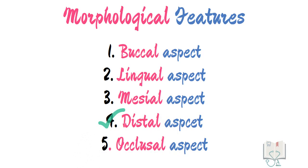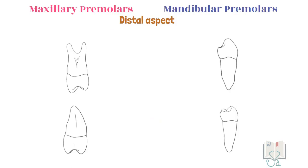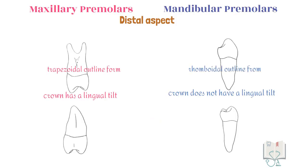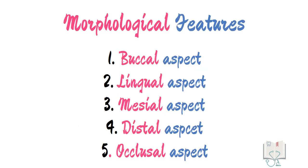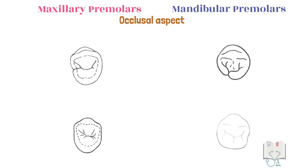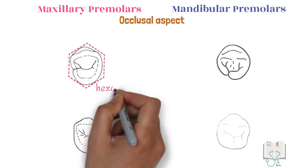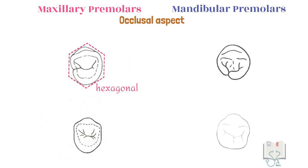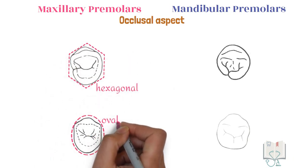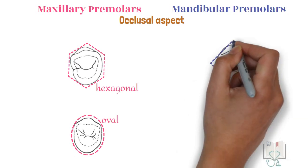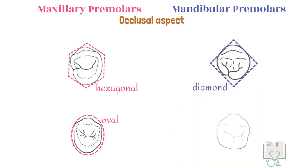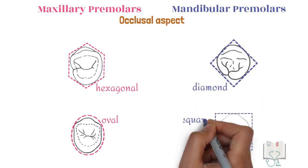Next, the distal aspect: the differences seen from the mesial aspect are the same in the distal aspect as well. Finally, the occlusal aspect. In the maxilla, the outline form of the first premolar is hexagonal and of the second premolar is oval, whereas in the mandible, the first premolar is diamond-shaped and the second premolar is squarish.